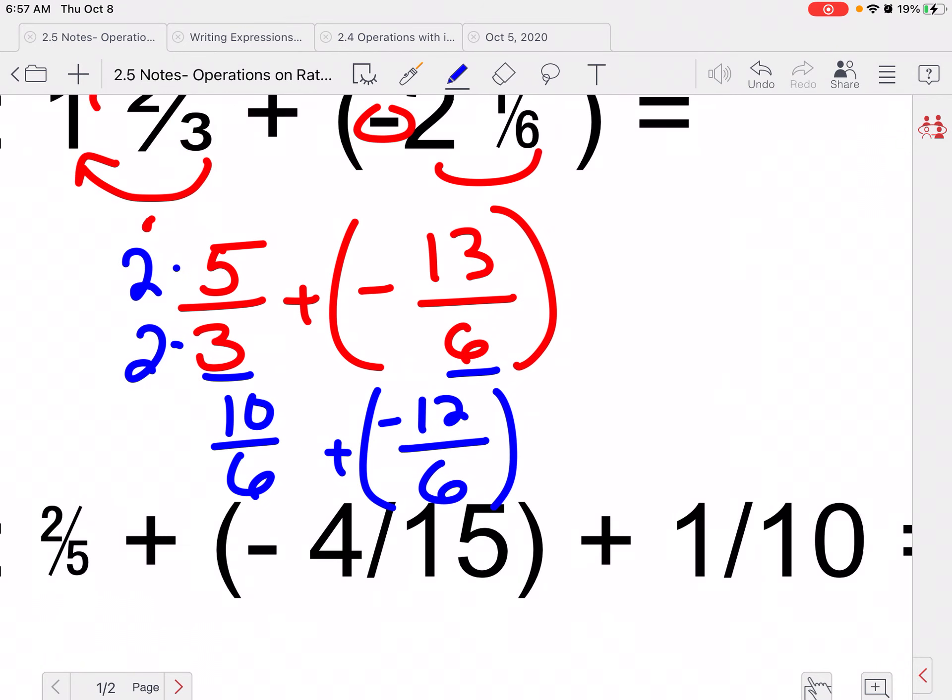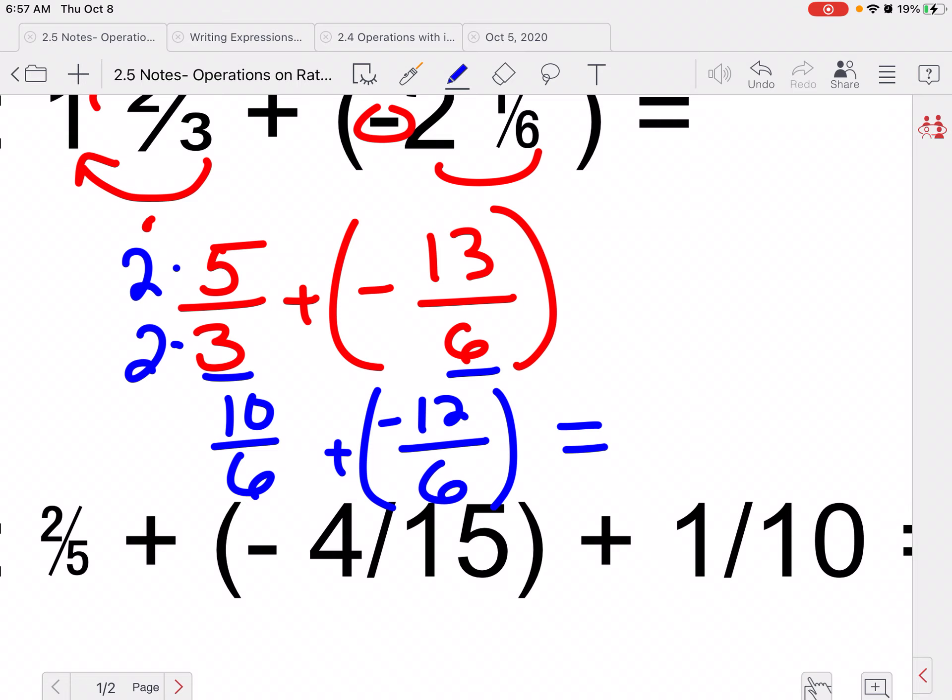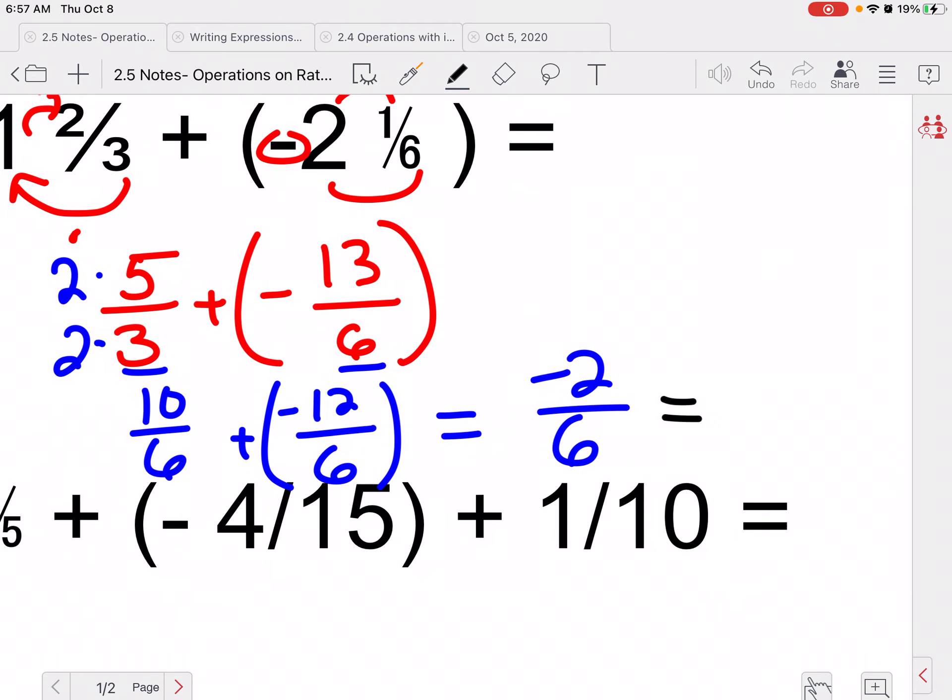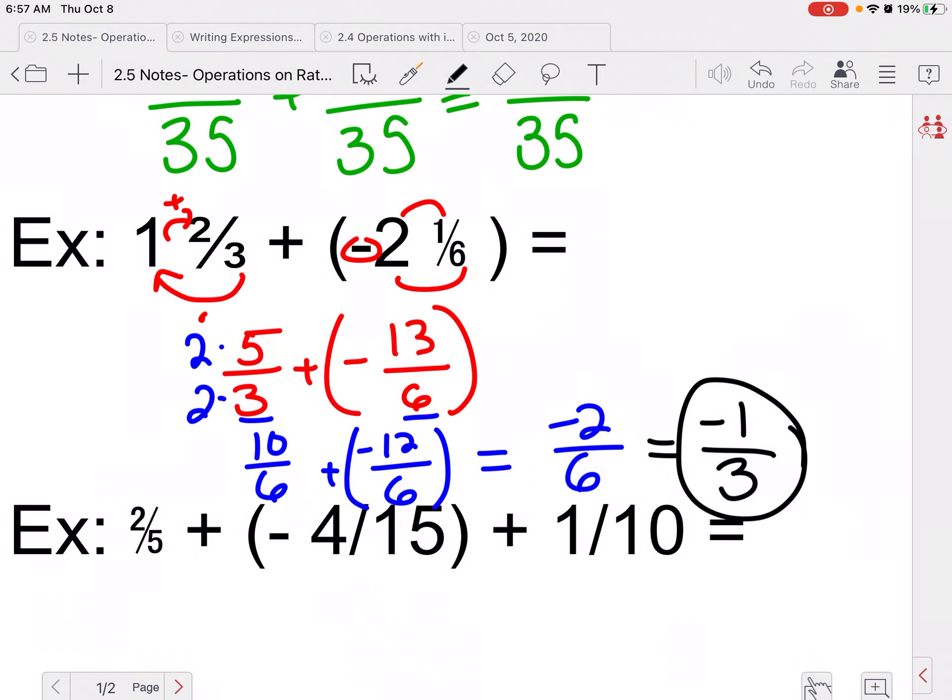So I get 10 plus -12 over 6, which is going to be -2/6. Now, I should always double check and make sure my fraction cannot be reduced. And 2 goes into both of those. So 2 goes into -2, -1 times. 2 goes into 6, 3 times. So my final answer is -1/3. So remember, mixed numbers for any of our operations, go ahead and change it into an improper fraction. That will just help us, especially with our positives and negatives. You don't have to worry about trying to borrow from the fraction part of the mixed number.